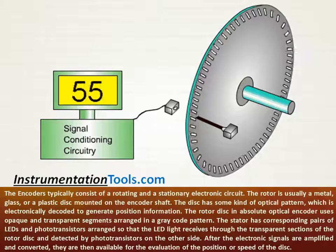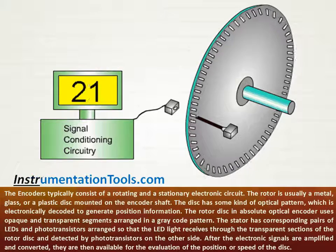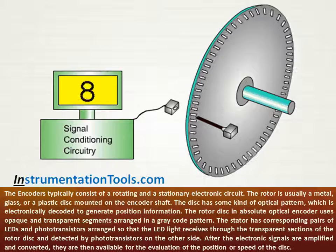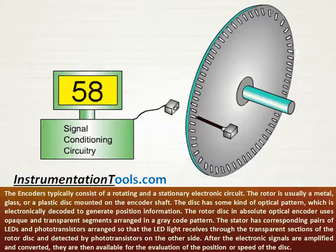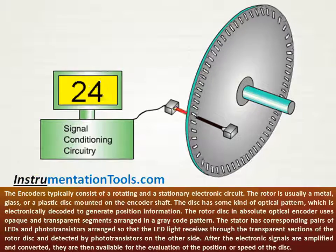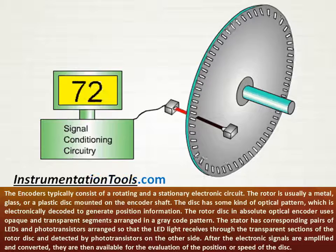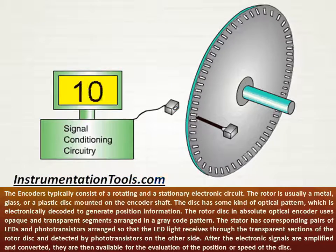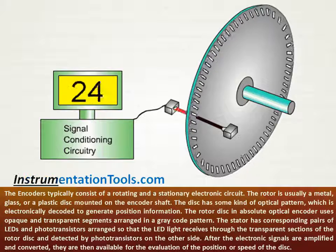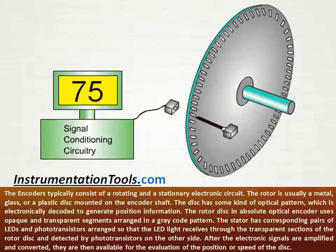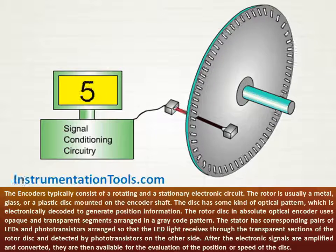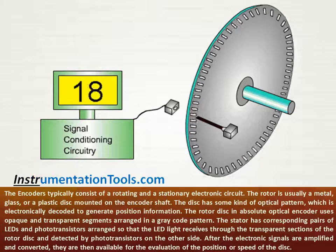The rotor disc in an absolute optical encoder uses opaque and transparent segments arranged in a grey code pattern. The stator has corresponding pairs of LEDs and phototransistors arranged so that the LED light passes through the transparent sections of the rotor disc and is detected by phototransistors on the other side. After the electronic signals are amplified and converted, they are then available for the evaluation of the position or speed of the disc.